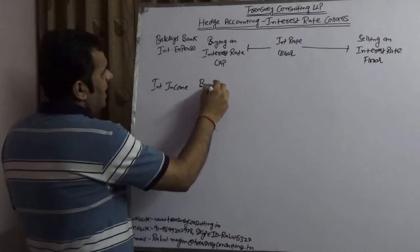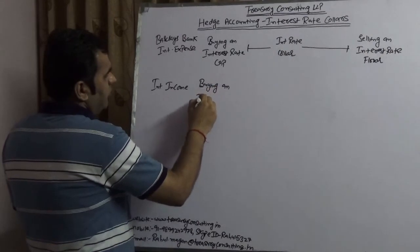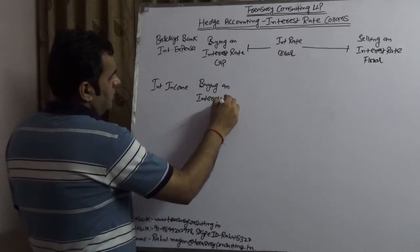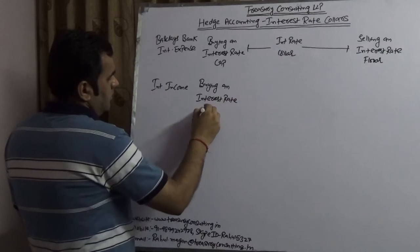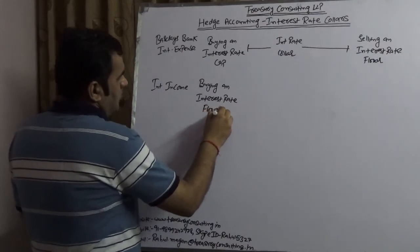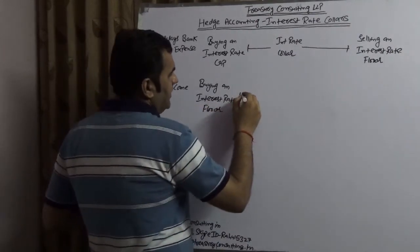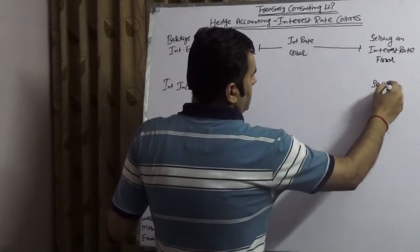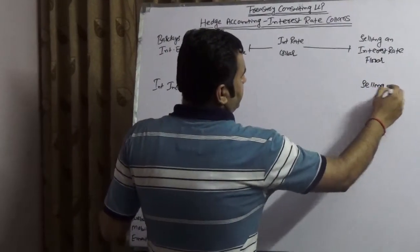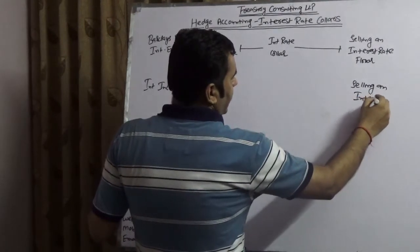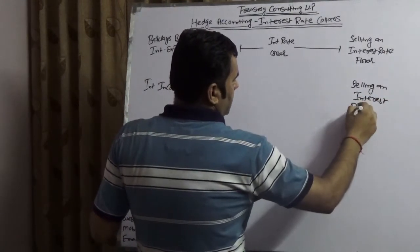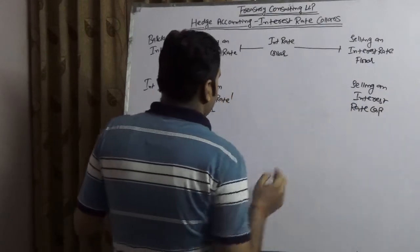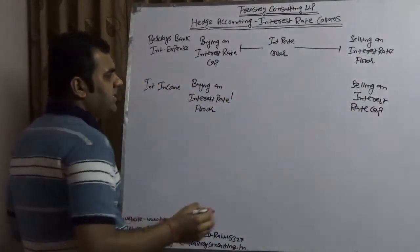Now take it the other way: if Barclays is having interest income, then they are going to be buying an interest rate floor and selling an interest rate cap. This is again an interest rate collar, but structured for income rather than expense.